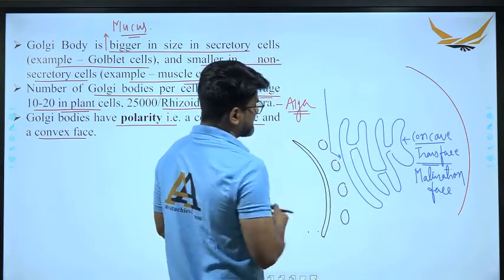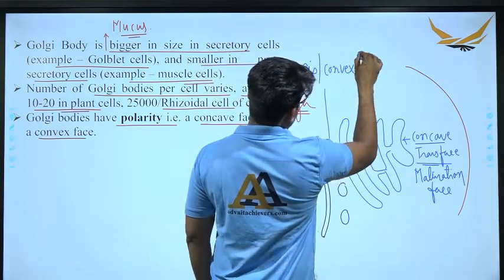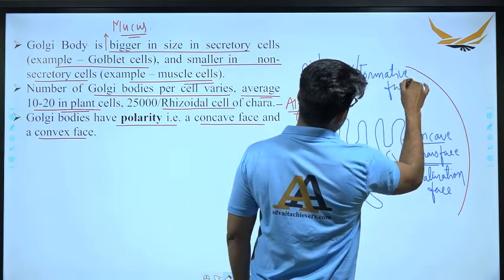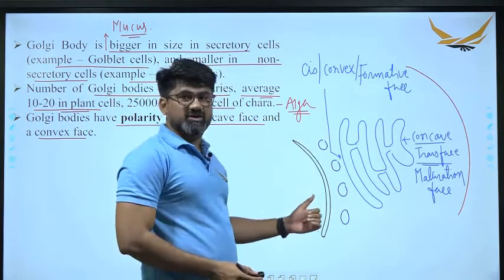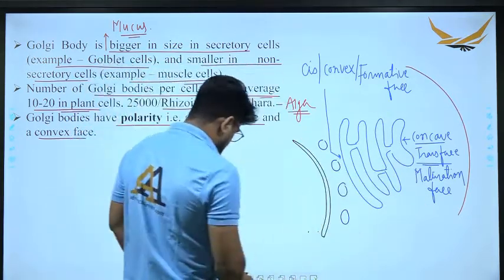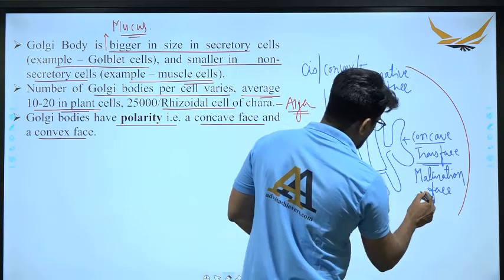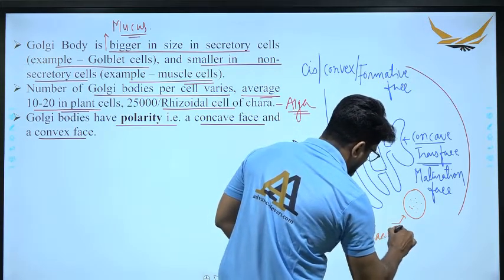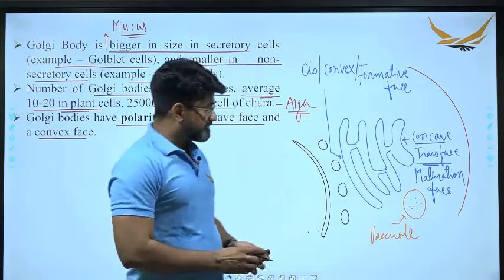The flattened structures within Golgi body are the cisternae. The gap between two successive cisternae is known as the intercisternae space. Two successive cisternae are also connected by intercisternae septa. Substances in vesicles pass through the lumen of the cisternae where modification occurs, and are ultimately packed into vacuoles and released.